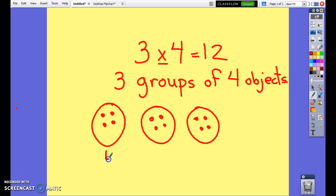Another way is to count or skip count. There's 4 in each group, so I write the number 4, then I count by fours: 4, 8, 12.